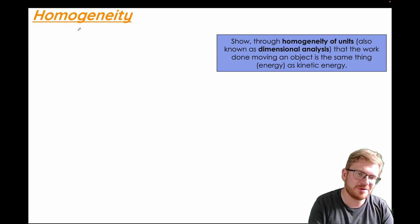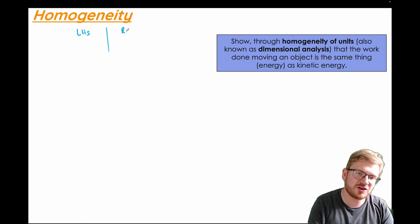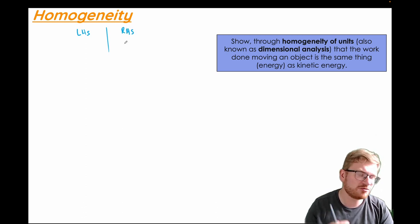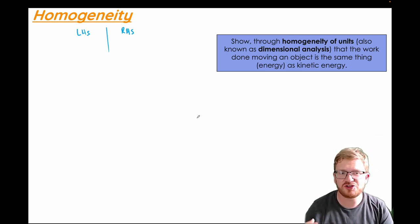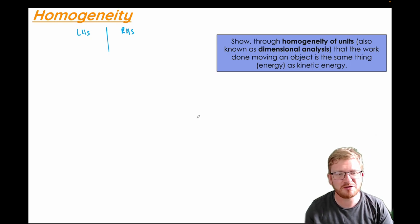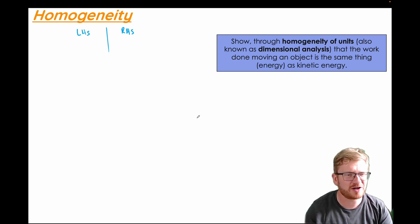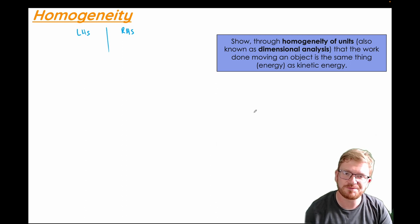What it basically means is: if you have a left-hand side of an equation — something before the equals sign — that should have the same units as the right-hand side. You can use that to check whether you should be squaring something, dividing by something, or multiplying by it.